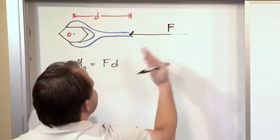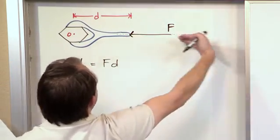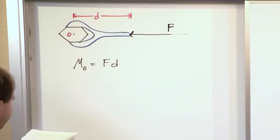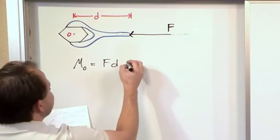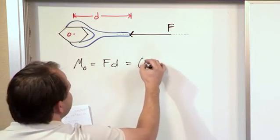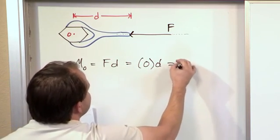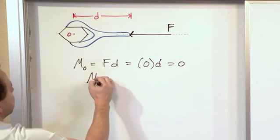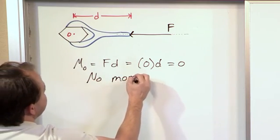So in this case, there's no perpendicular component at all because all of it is parallel and runs straight into the axis there. So essentially, the force that you put in here is the perpendicular part of the force. So you get zero times D, so you get zero. So you have no moment.